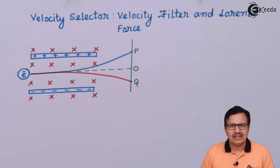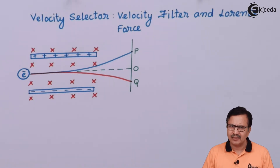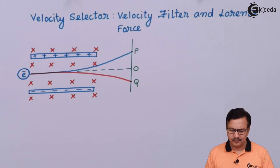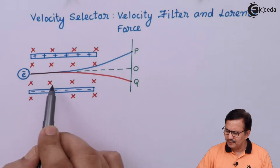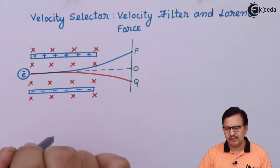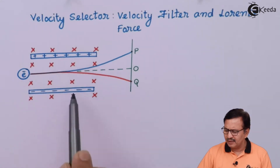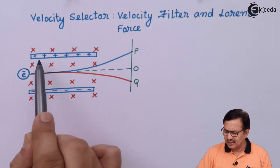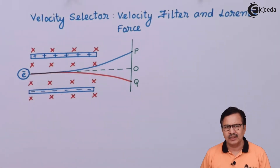Let us consider a region of space in which electric field and magnetic field is acting simultaneously. Let us look at the situation in a picture form. Here we have the magnetic field that is directed inside the plane of the paper, and we also have the electric field that is directed from the positive plate to the negative plate.